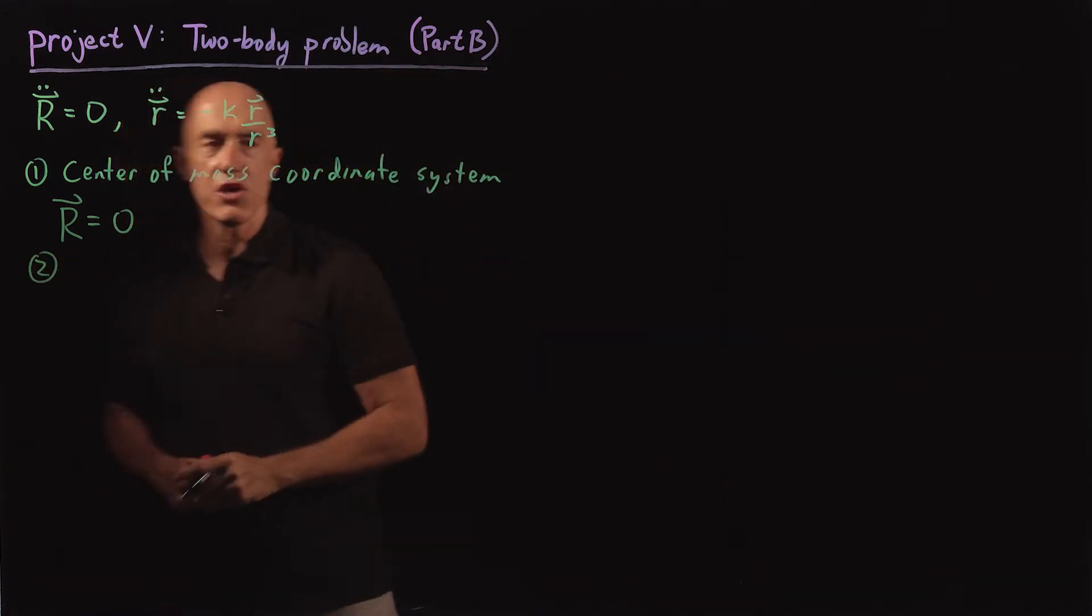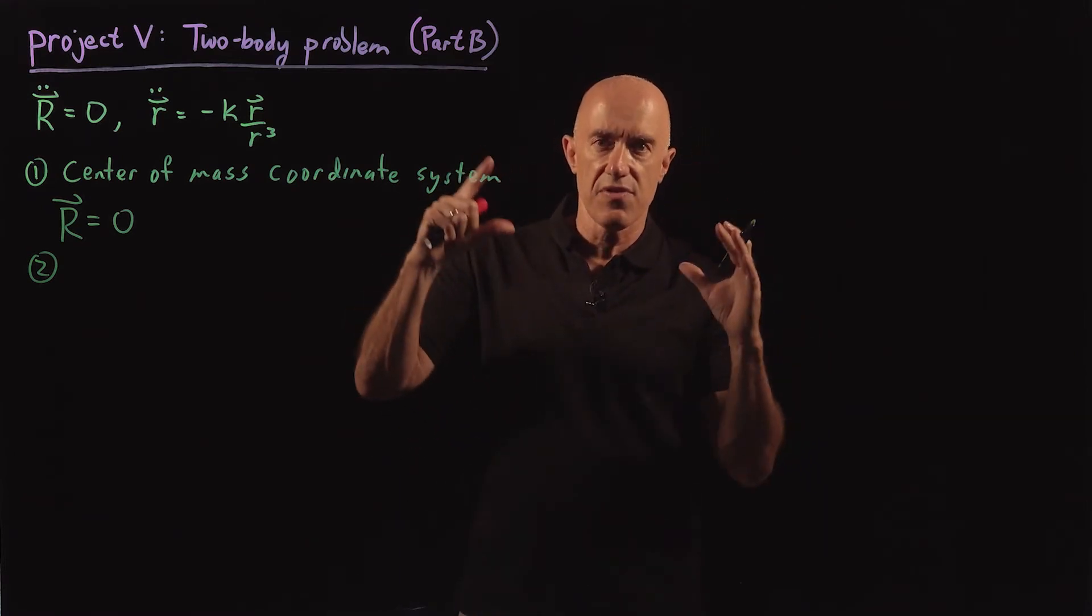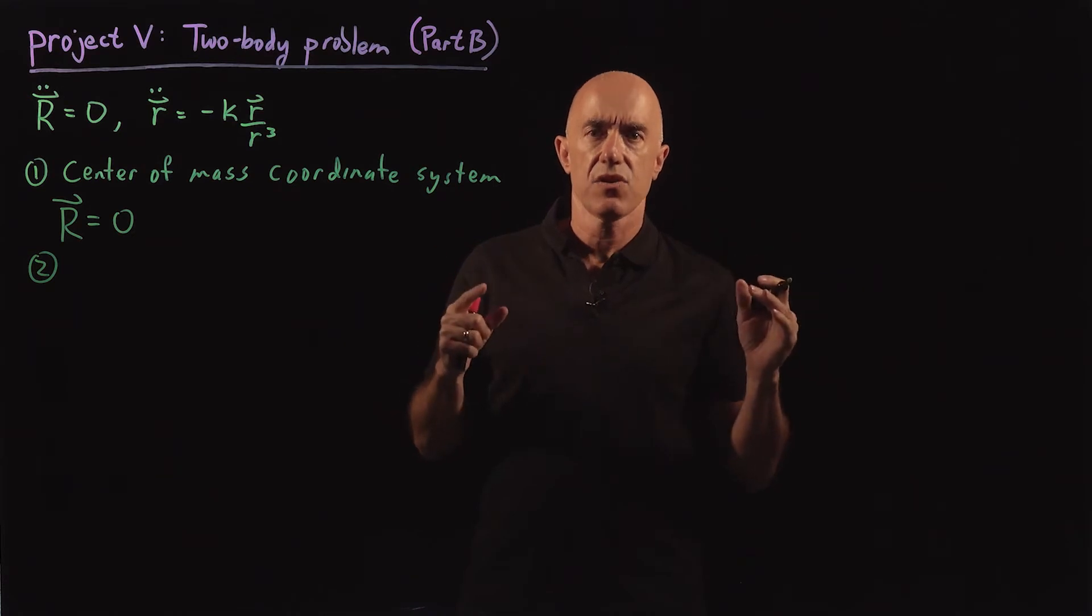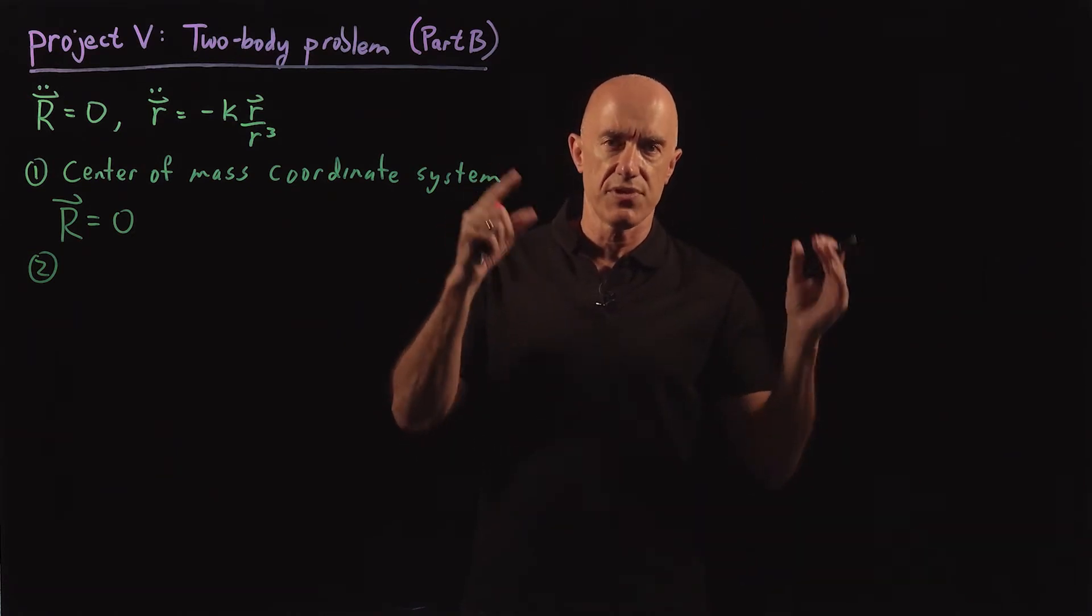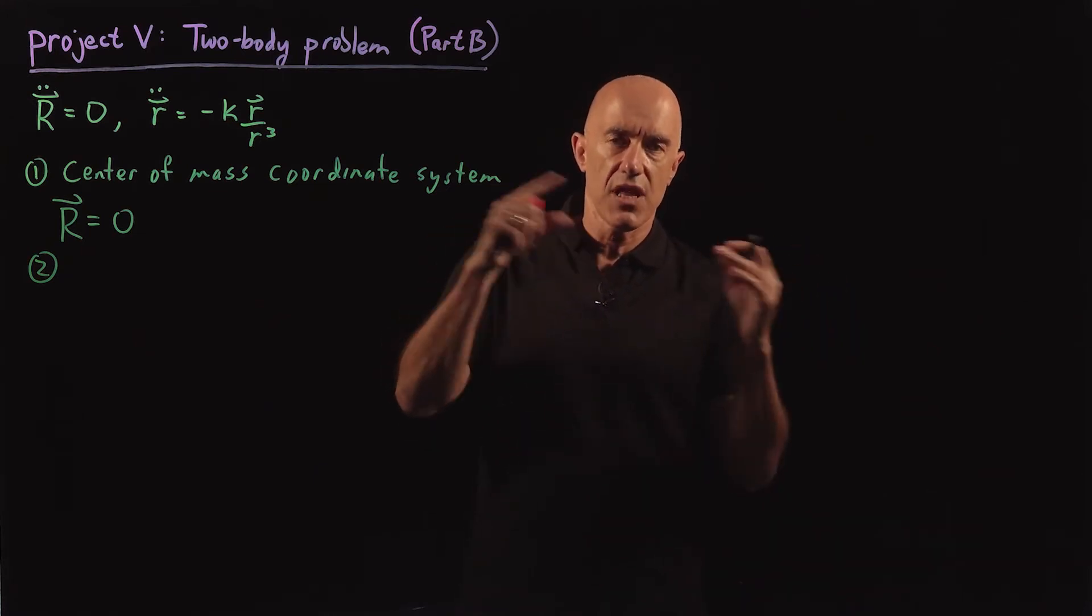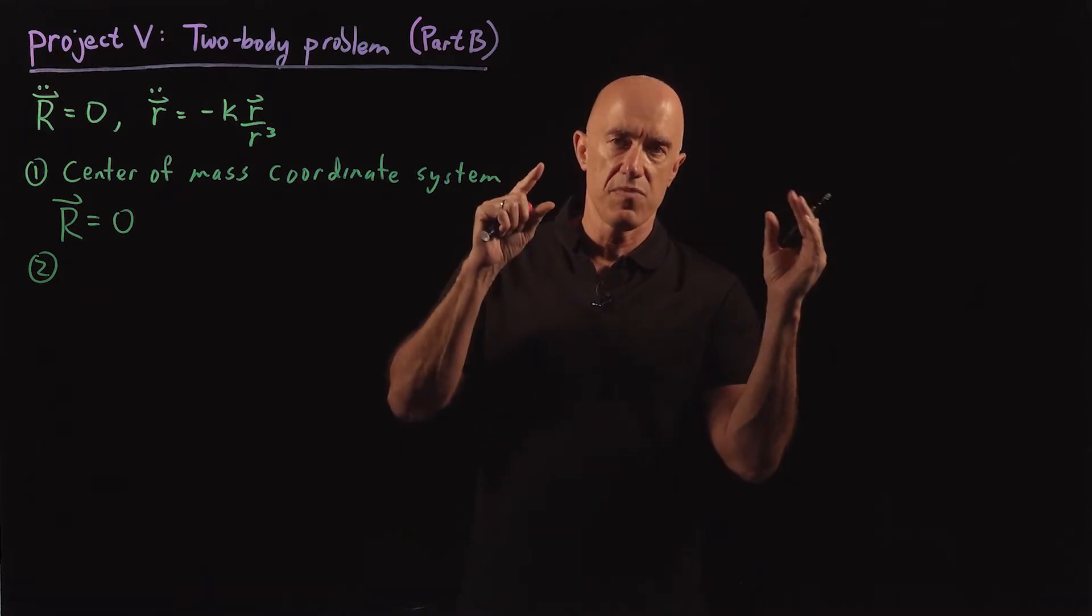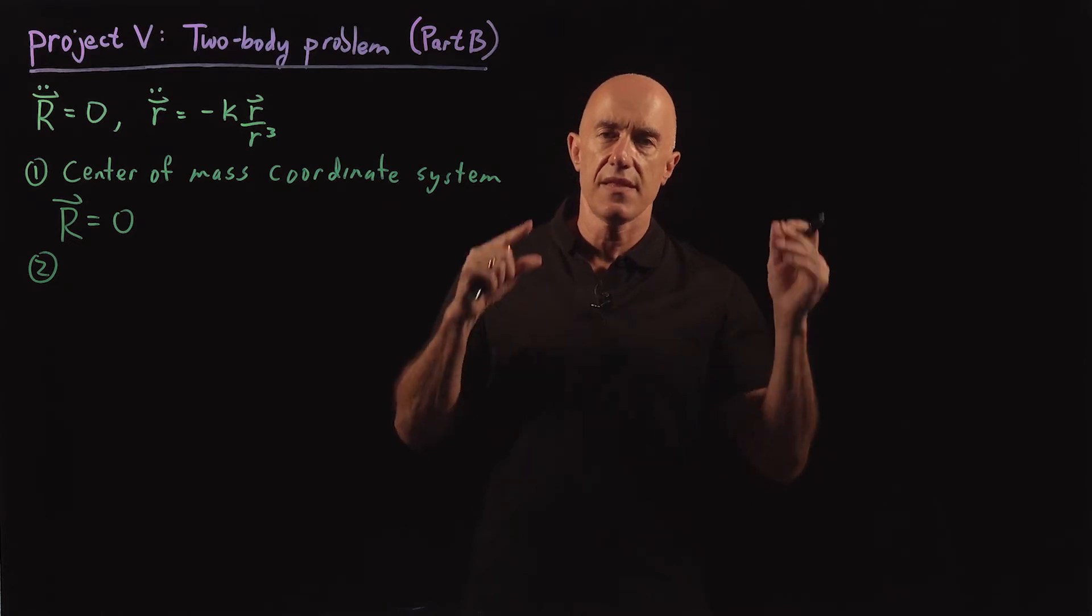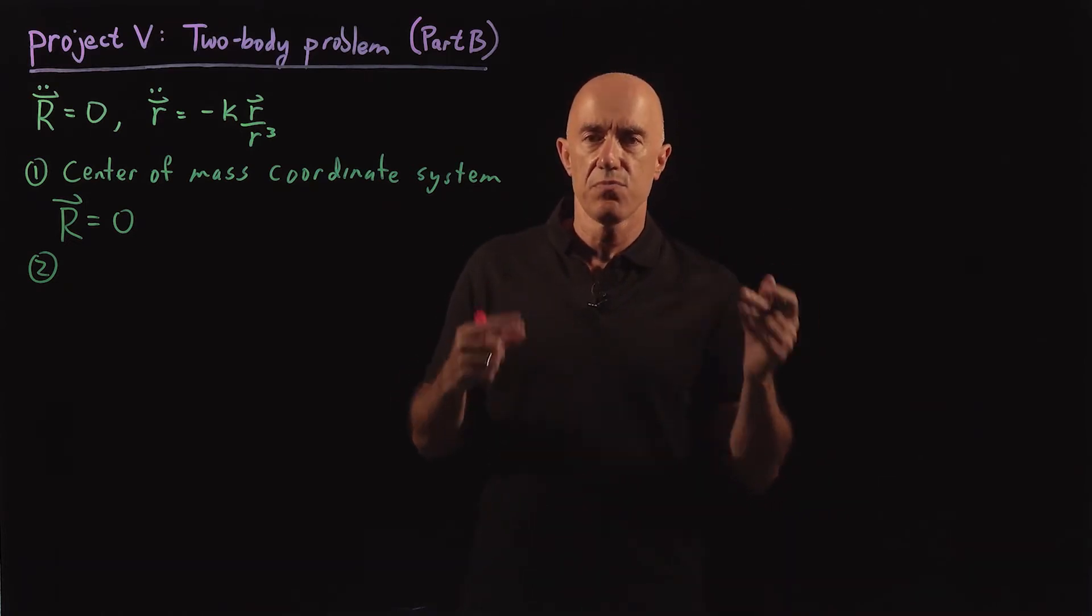Two, you can show that if the motion, if the position of the masses start in the xy plane, so we define the xy plane to contain the initial position of the masses, and also the initial velocity vectors of the masses. So the masses themselves and their velocity vectors sit in the xy plane, we can always do that with the two body problem.